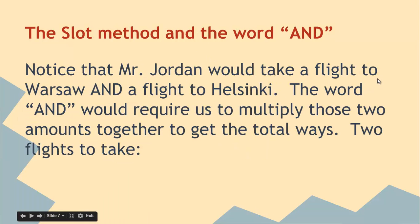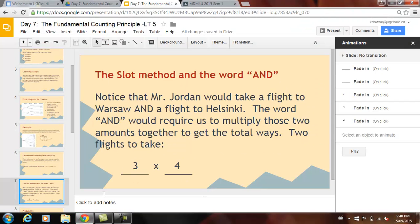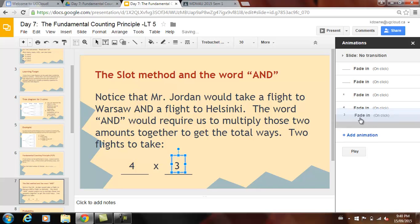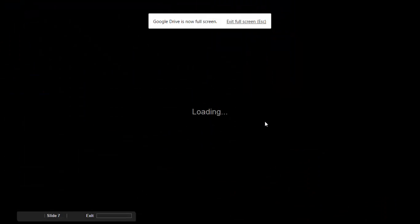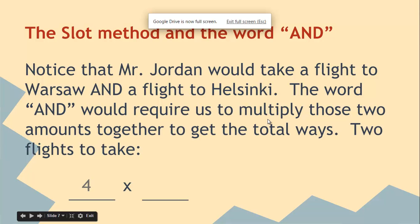Notice that Mr. Jordan would take a flight to Warsaw and a flight to Helsinki. The word 'and' would require us to multiply these two amounts together. Two flights to take, we've got two slots, we're going to multiply, and we'll multiply the numbers three times four, and that's actually in the wrong order. It should be four times three, because the first way is there's four ways for the first flight, three ways for the second.